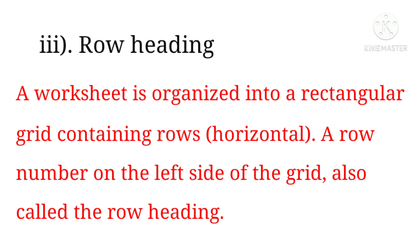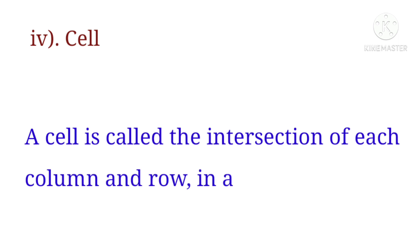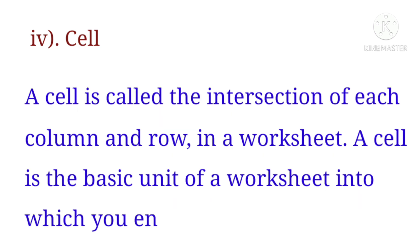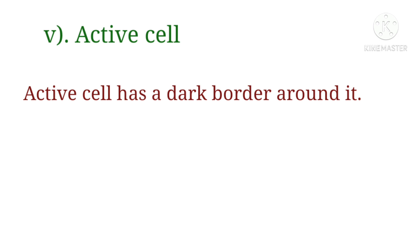Cell: A cell is called the intersection of each column and row in a worksheet. A cell is the basic unit of a worksheet into which you enter data. Active cell: Active cell has a dark border around it.